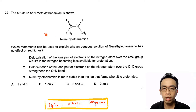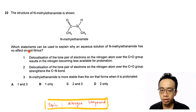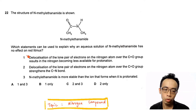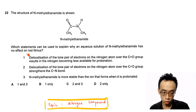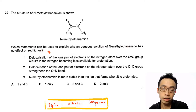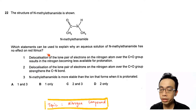Now question 22: the structure of N-methyl ethanamide is shown. Which statements can be used to explain why an aqueous solution of N-methyl ethanamide has no effect on red litmus? No effect on red litmus means that this molecule is neutral. And there are 3 statements here that we want to run through.